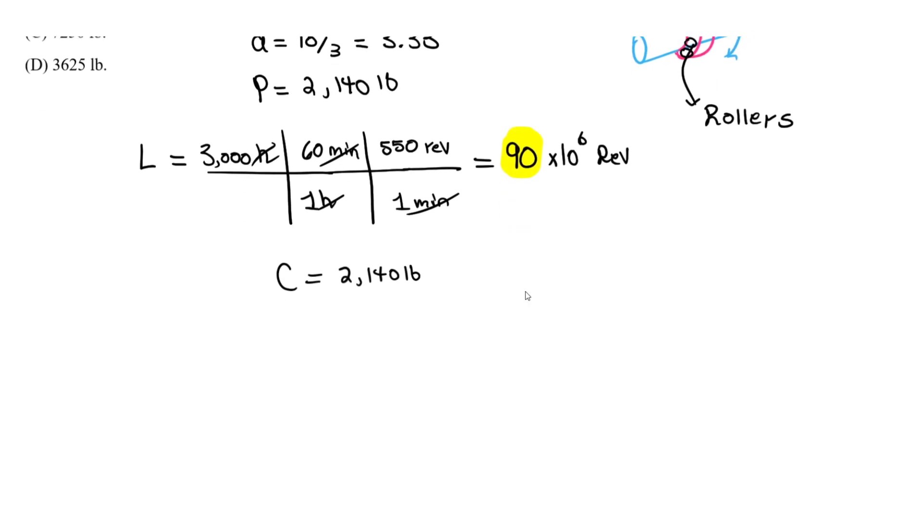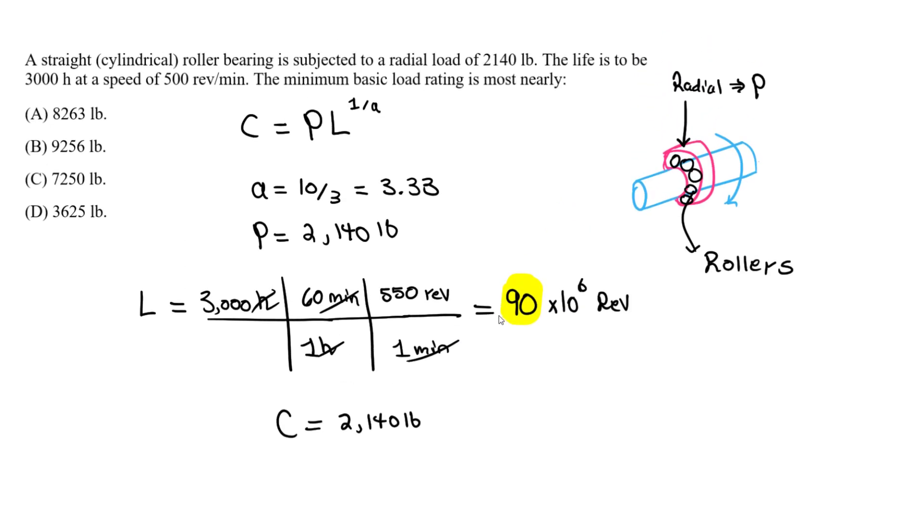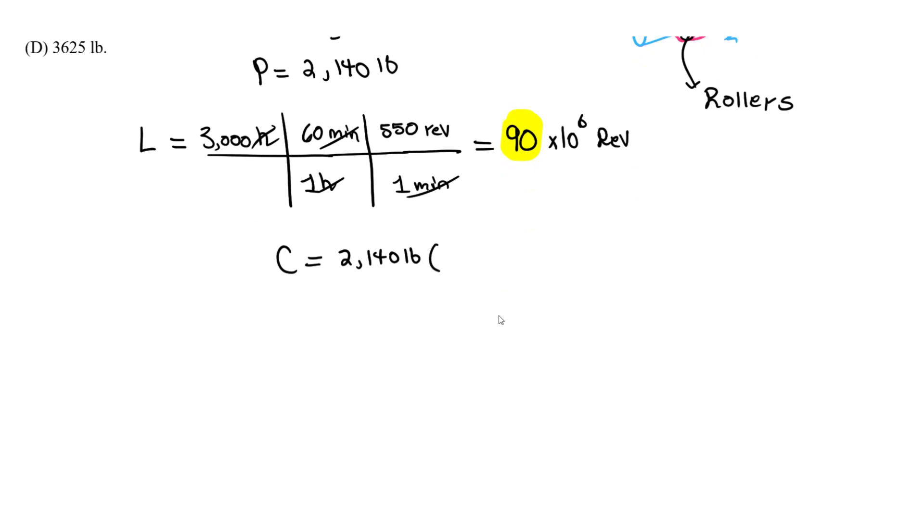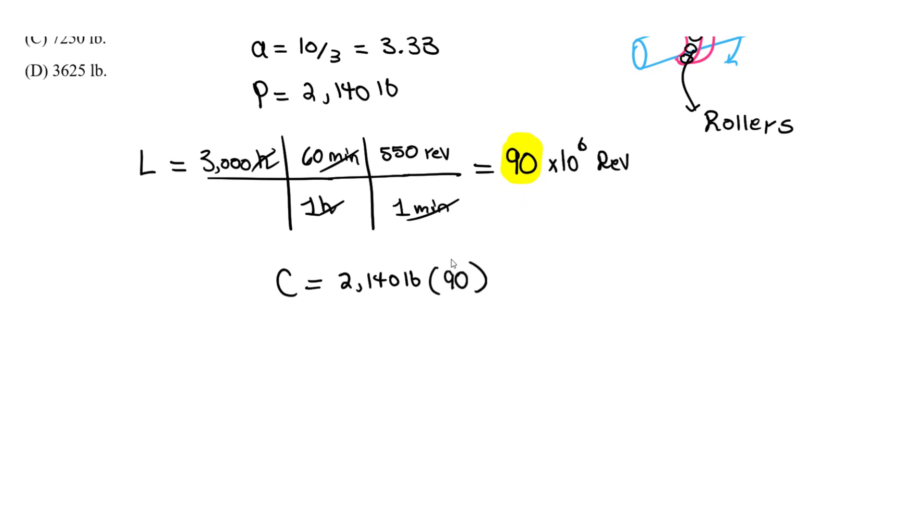And so we take this P value, we multiply by L, which is 90—just plug in 90—and you raise to the power of 1 over a. And a is going to be around 3.33 or 10/3. So now you just solve for C.